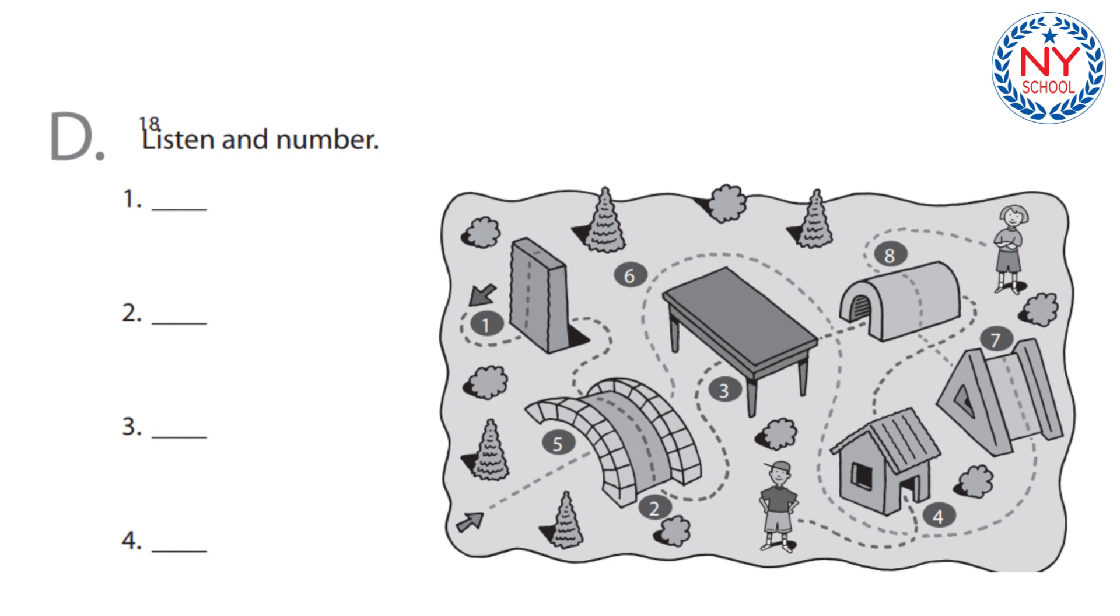1. Where did the boy go? He went under the bridge. 2. Where did the girl go? She went around the table.